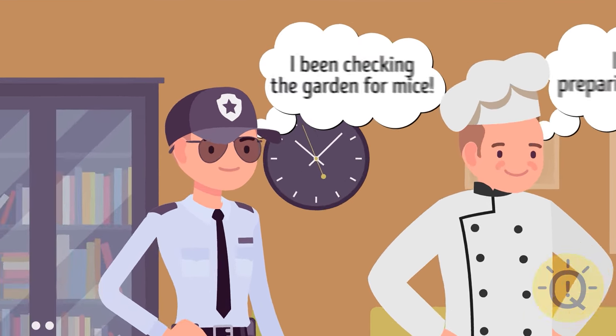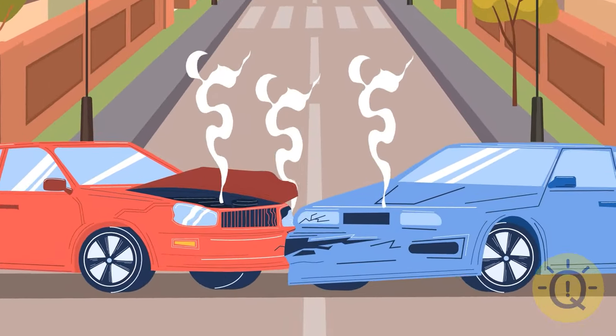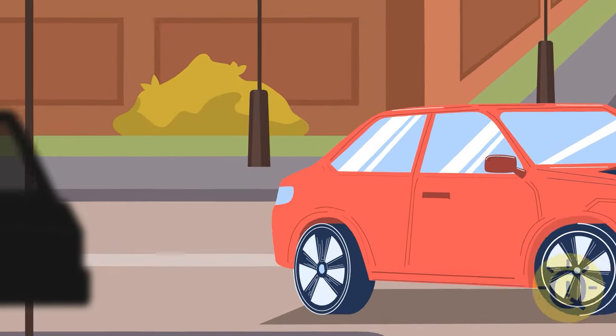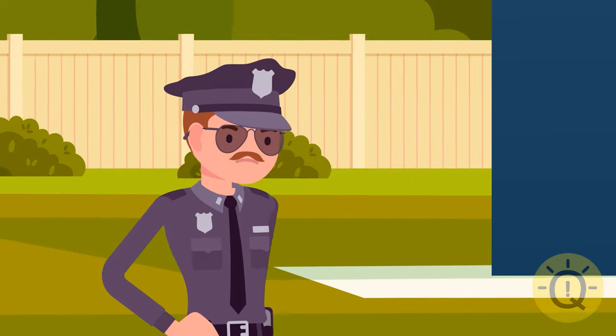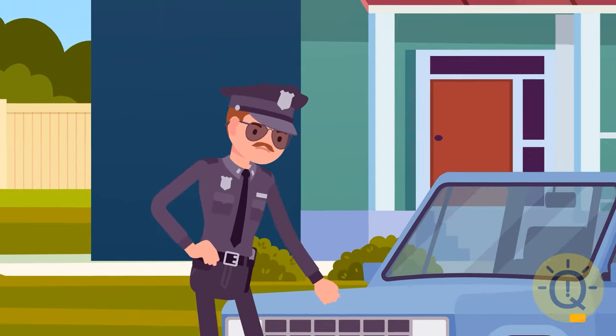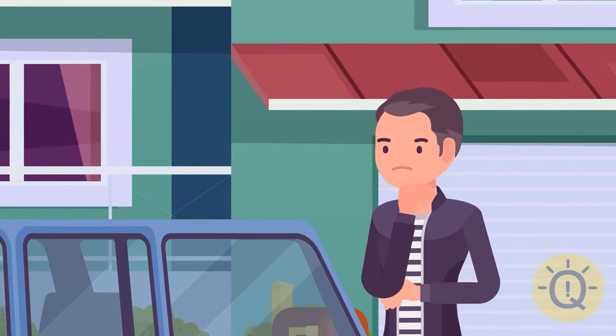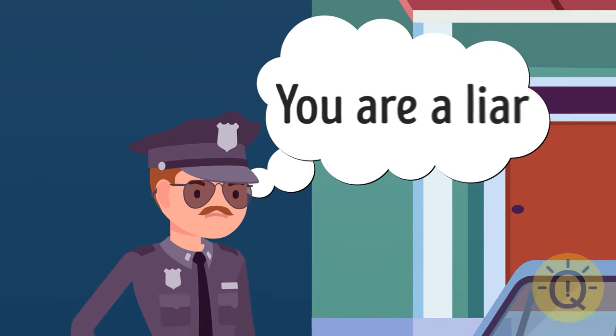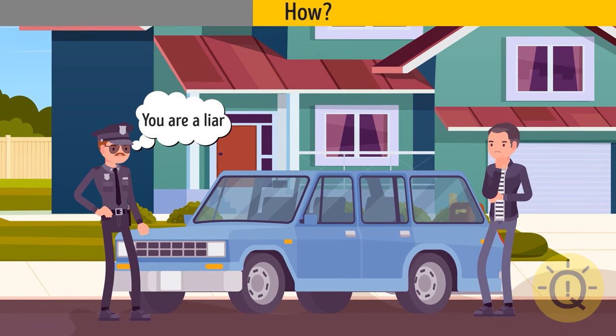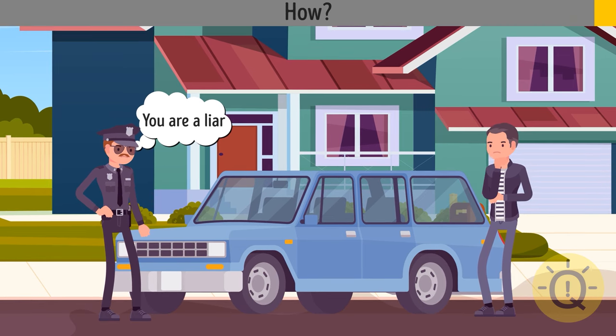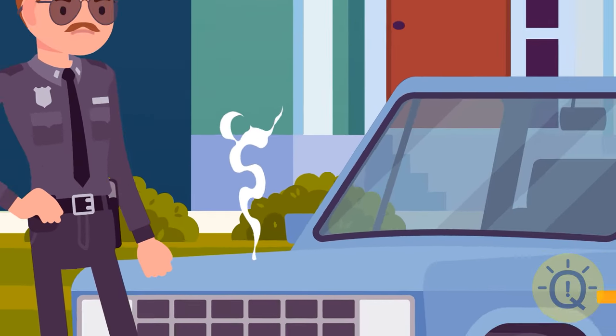An accident happened at a busy crossroads in a small town. A driver who caused the crash left in a hurry. Luckily several witnesses managed to describe the car. A police officer headed to the suspect's house. There he saw a car that looked exactly like the one from the description, but its owner claimed that he had spent all day at home. The police officer knew the suspect was lying in no time. How? He touched the car hood. It was still hot from the engine that had worked not so long ago.